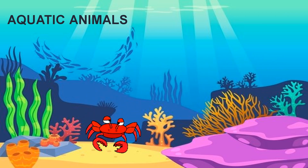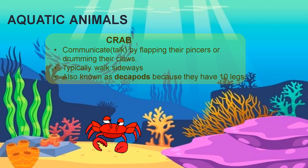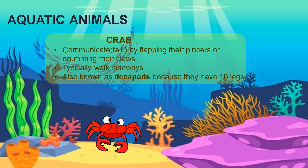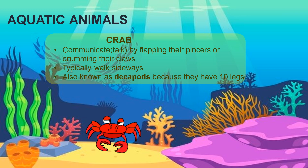You guessed it right — it's a crab. So some key facts about crab: they communicate by flapping their pincers, or you can say drumming their claws. They typically walk sideways. Also known as decapods because they have 10 legs.